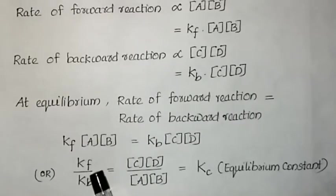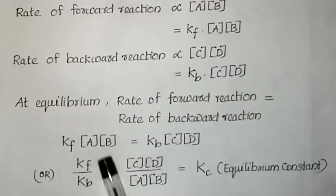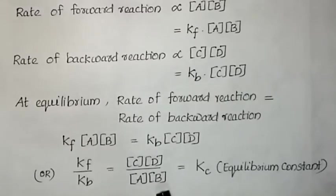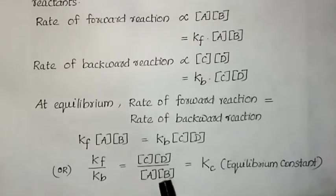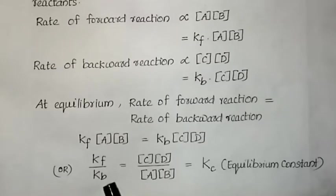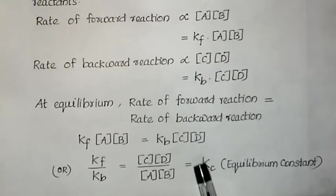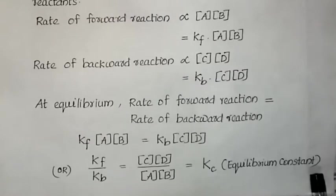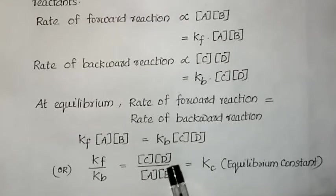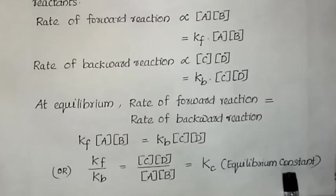Rearranging, Kf/Kb = [C][D] / [A][B]. At equilibrium, this ratio of concentration terms becomes constant because Kf divided by Kb gives a new constant. This constant is known as Kc, the equilibrium constant. So Kc = [C][D] / [A][B].